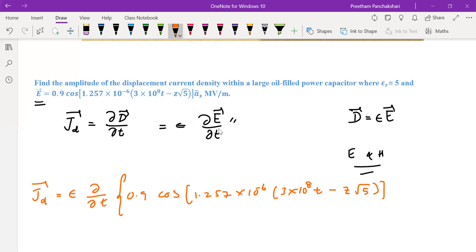It is a vector. Look at this one. E is a vector here. So we need the unit vector also, âₓ, into mega volts per meter. So consider that mega also 10⁶. So that is a substitution.